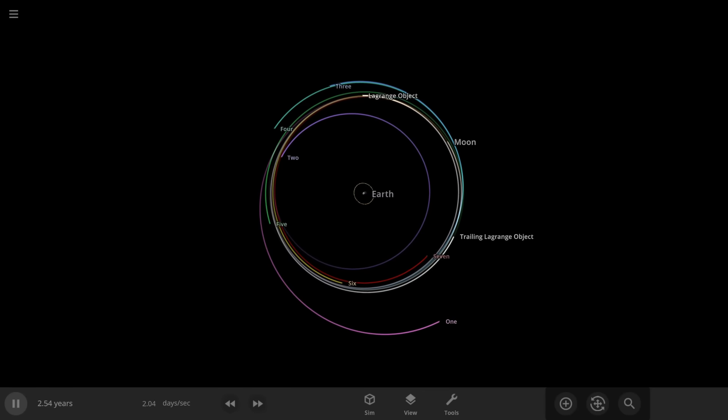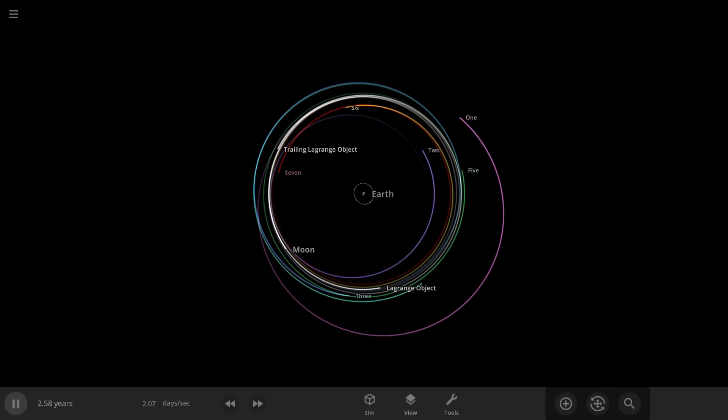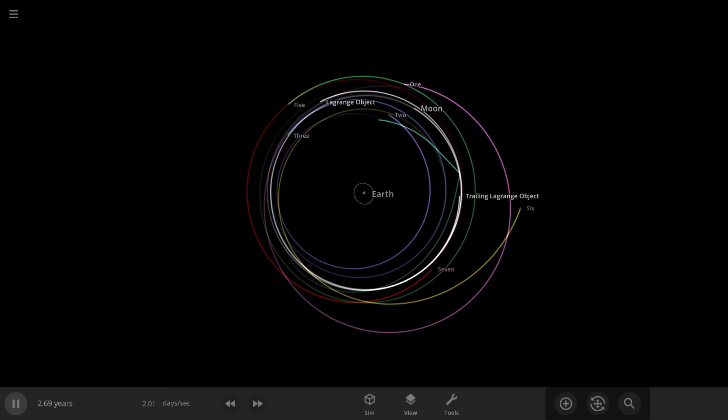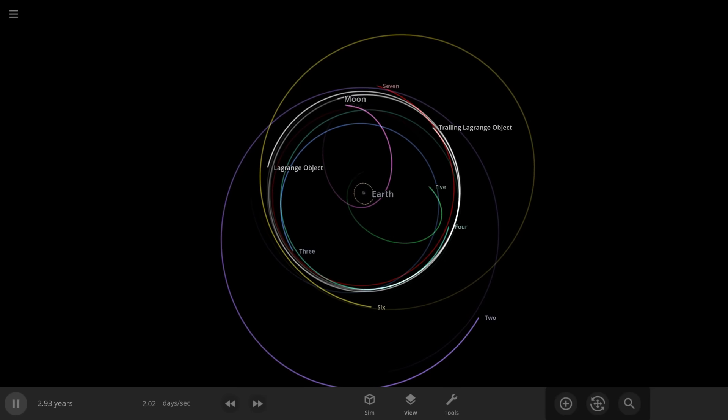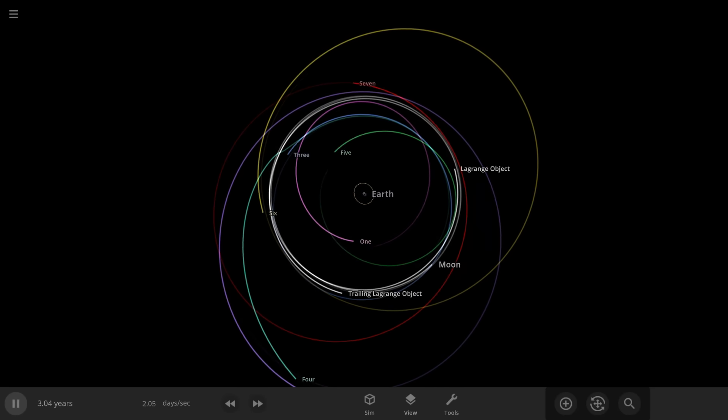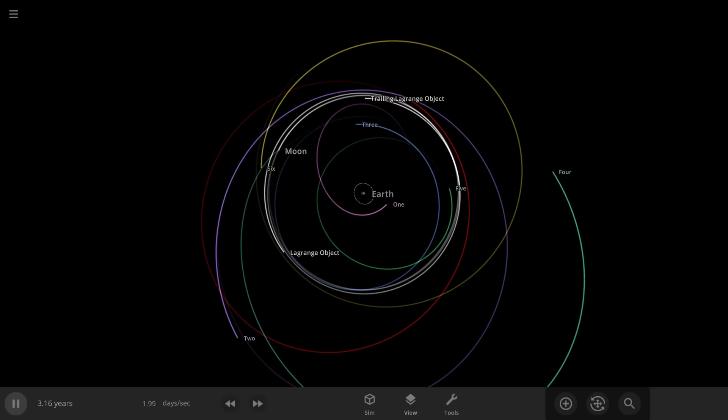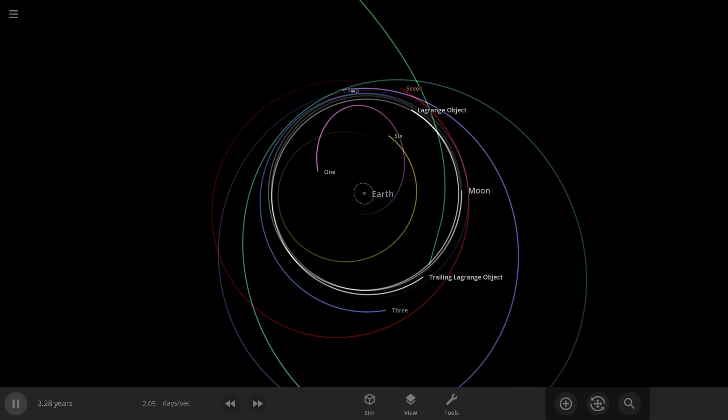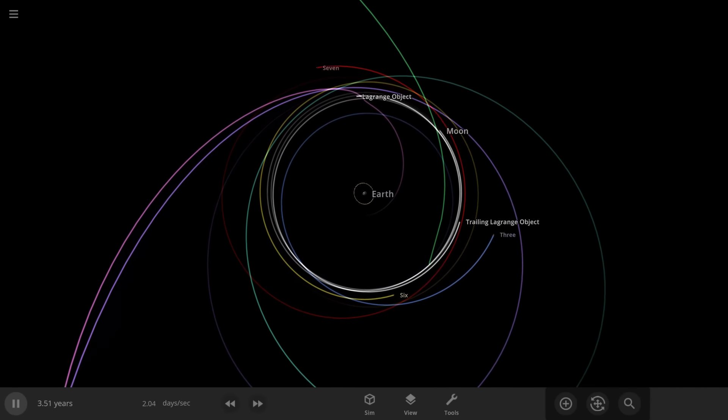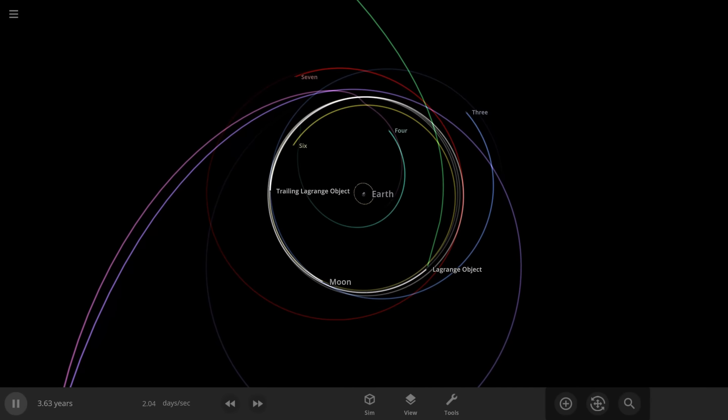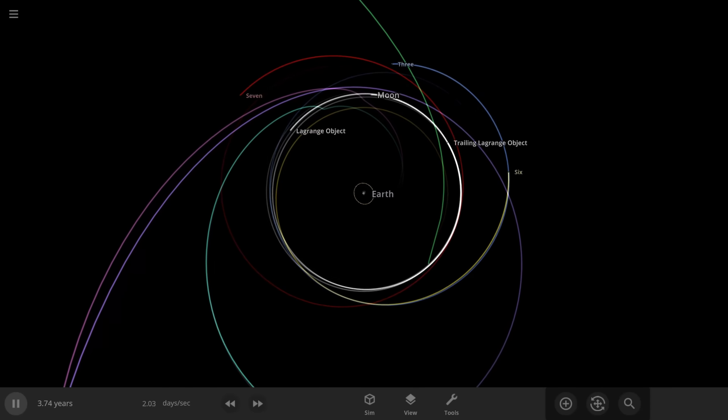However, at this point, this is where our model starts to sort of see its limits because the Earth and the Moon system are orbiting around the Sun. And also the Moon has an eccentric orbit relative to the Earth. And it turns out that if you start to do long-term integrations and modeling of this, that the L4 and L5 points aren't totally stable around the Earth and the Moon. But that's fine. They're still very useful.